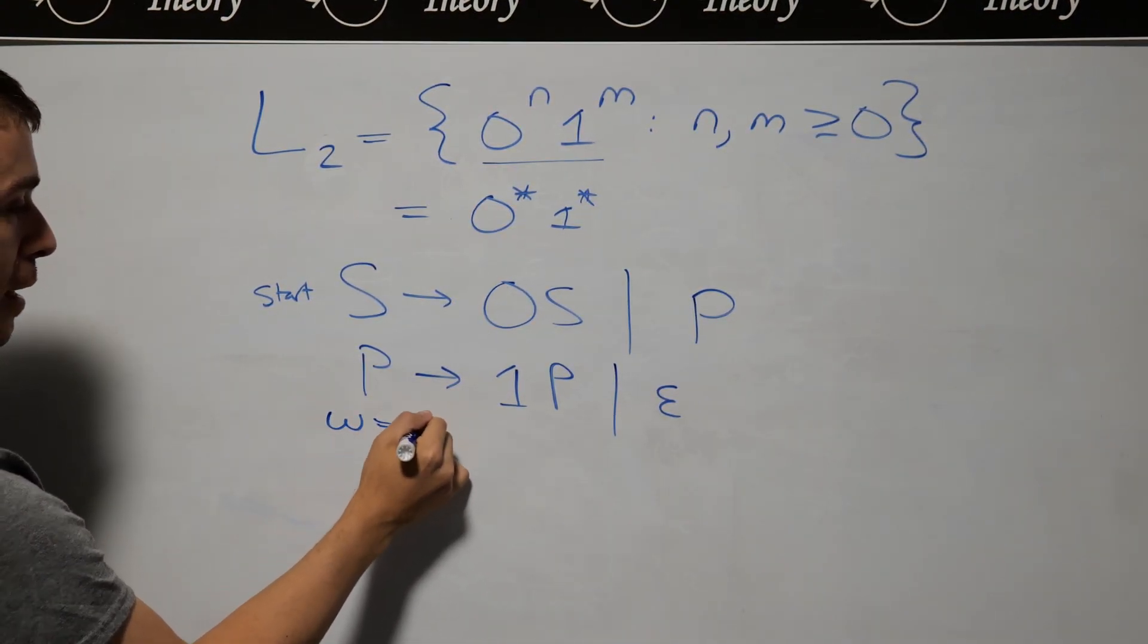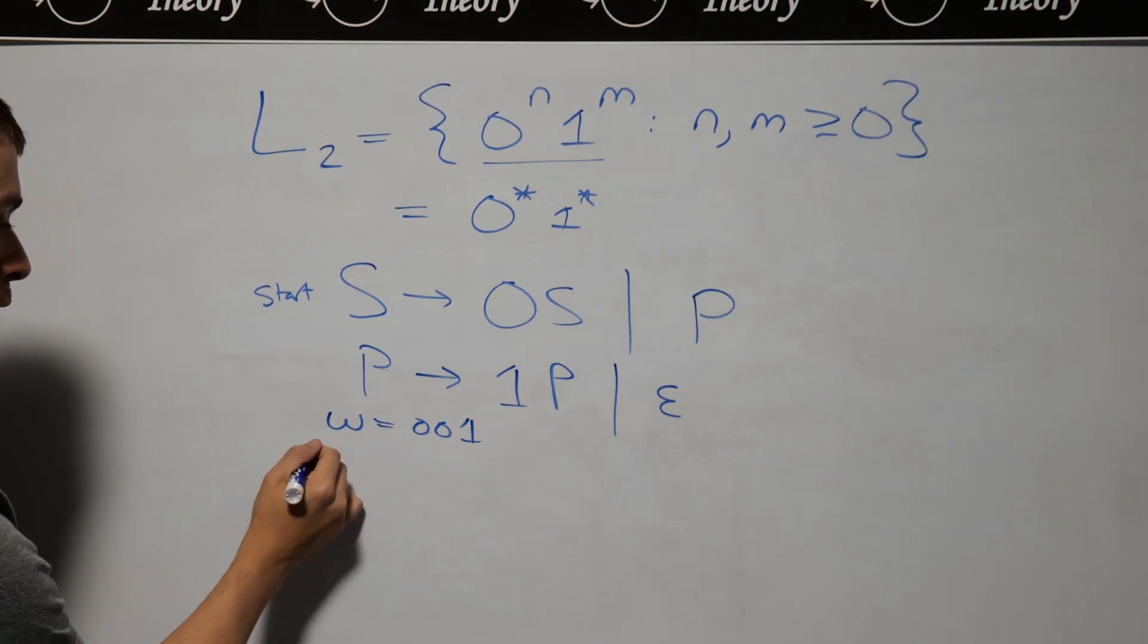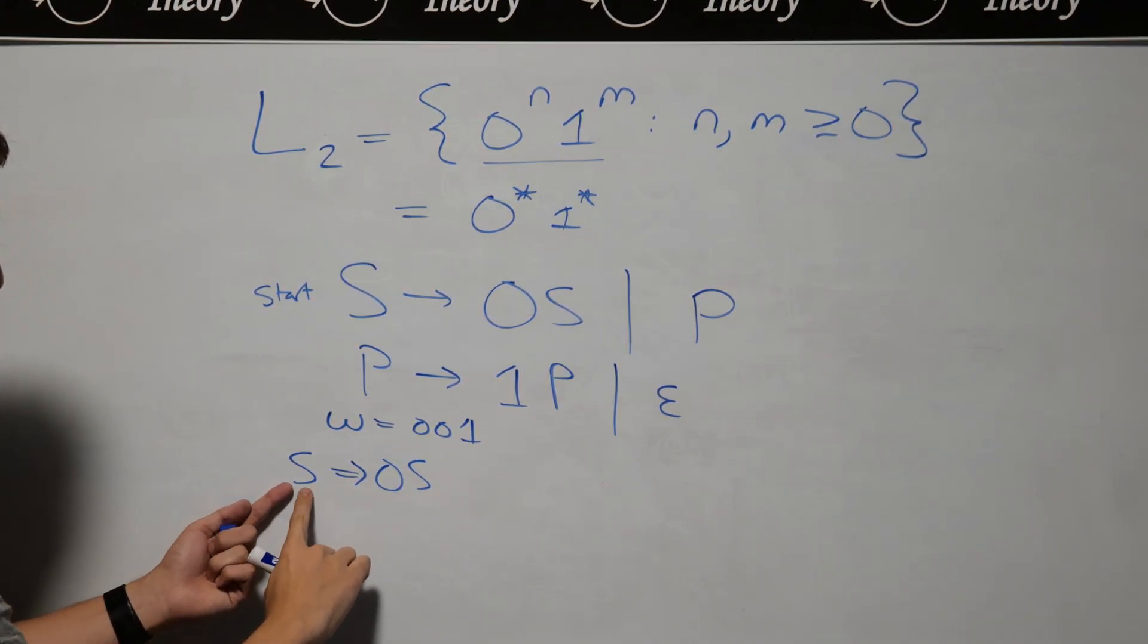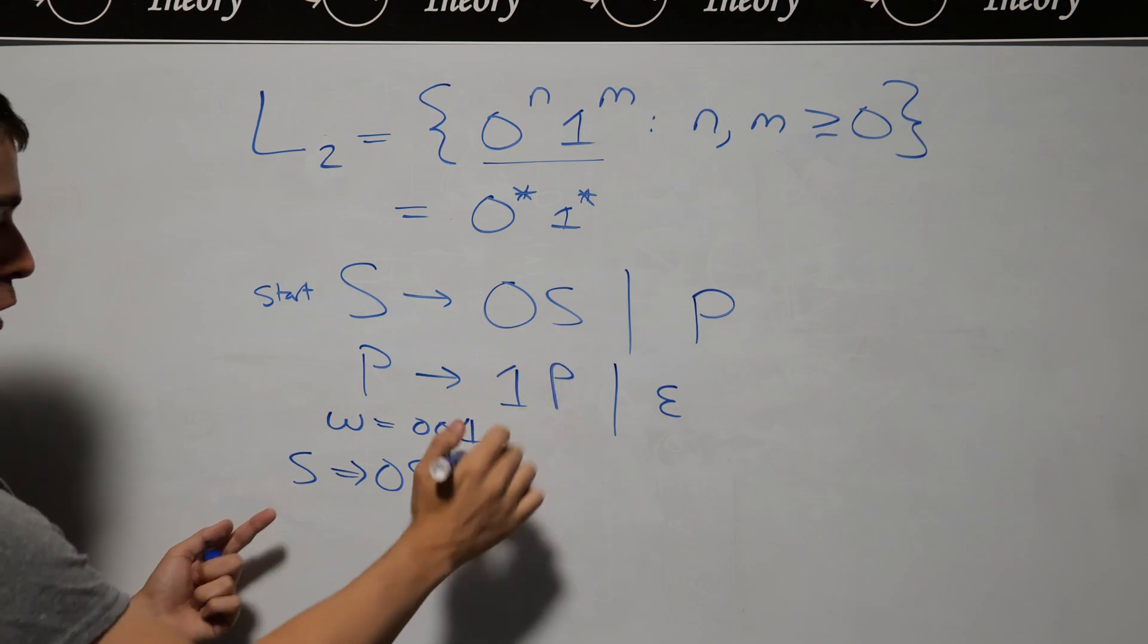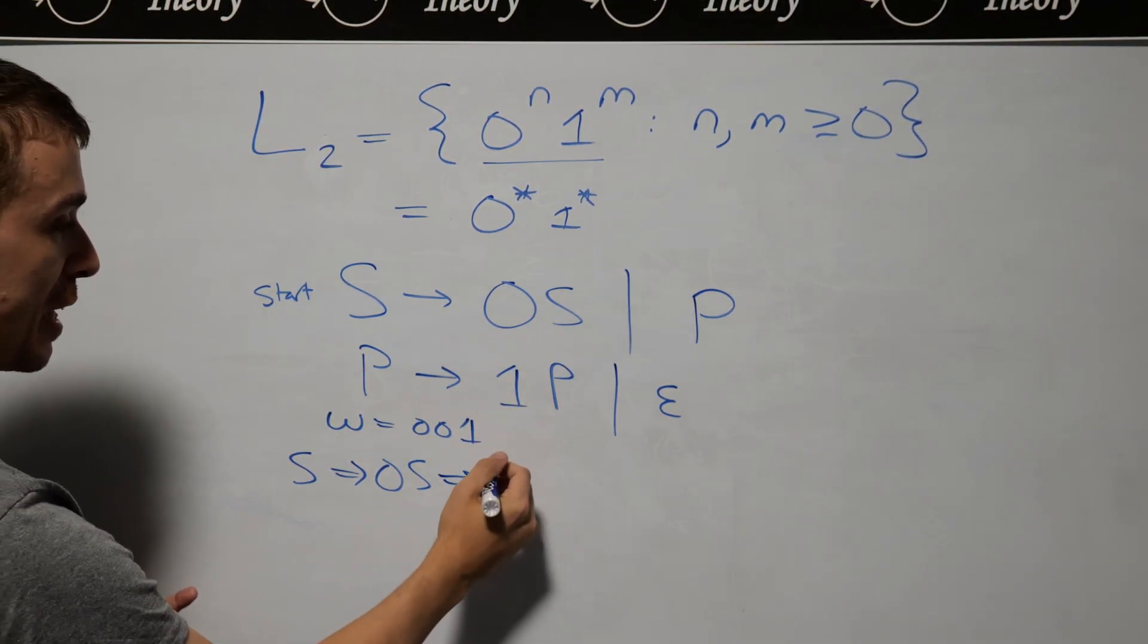And so if we look at a particular example, let's consider the string, say two zeros and a single one, then a derivation will be S goes to 0S. So I replace this S with 0S, which is this rule, then I'm going to replace this S with another application of the same rule. So I get 00S.